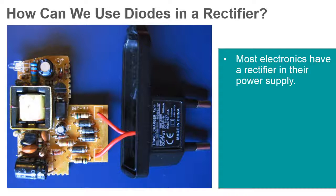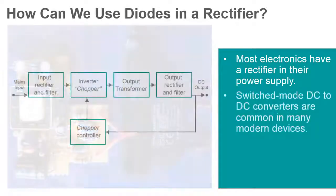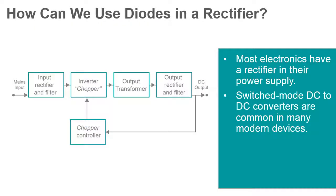Converting DC power from one voltage to a different voltage is more complicated. A common method is to first convert DC power to AC power, but at a frequency much higher than the 60 Hz distribution power. This higher frequency, usually tens of kilohertz, requires a smaller transformer.